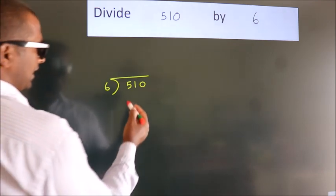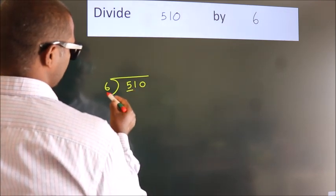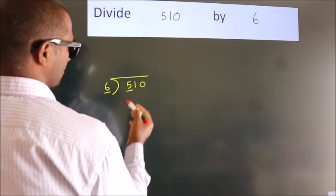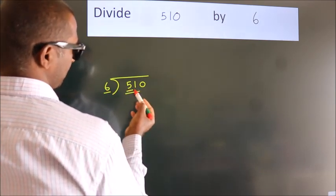Next, here we have 5, here 6. 5 is smaller than 6, so we should take 2 numbers: 51.